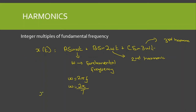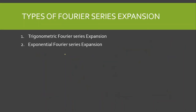For example, if x(t) = 2·sin(ωt) + 7·sin(2ωt) + 11·sin(3ωt), the third harmonic is more dominant because its weight of 11 is greater than the second harmonic's weight of 7. Then we have the types of Fourier series expansion: trigonometric Fourier series expansion and exponential Fourier series expansion.